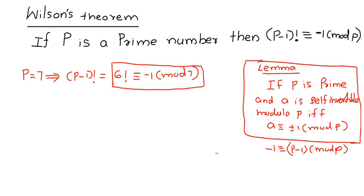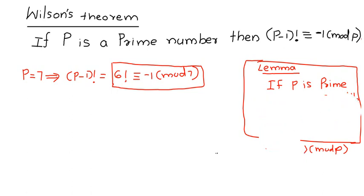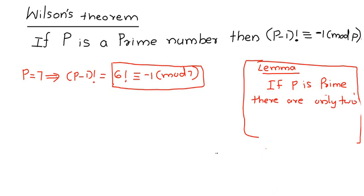From this result, if p is prime, there are only two self-invertible least residues modulo p: they are 1 and p minus 1.